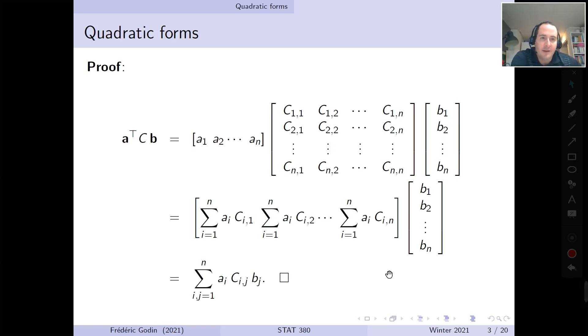So let's prove that. Well, the proof is quite straightforward. There's no fancy mathematics there. It's simply taking that product, writing the product, and then looking at the results. So here, a transpose Cb, it's the vector a times the matrix C times the column vector b. So first, to go from here to here, we can multiply the first vector and the first matrix together.